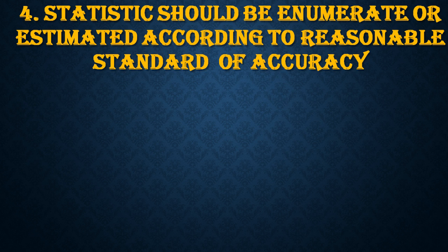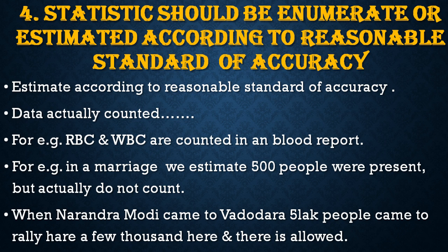The fourth point: statistics should be enumerated or estimated according to a reasonable standard of accuracy. Data may be actually counted — for example, RBC and WBC in blood are counted in a blood report; they are accurate data. But when we go to a marriage, we estimate that 500 people were present without actually counting them. Or when Narendra Modi came to Vadodara, it was said 5 lakh people came to the rally — a few thousand either way is acceptable. Therefore, statistics may be estimated on a reasonable basis and still count as statistics.